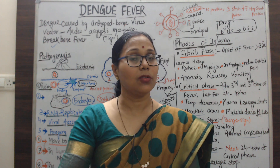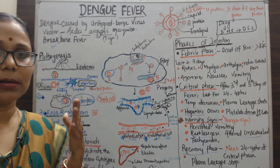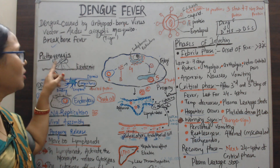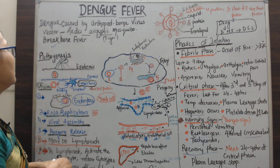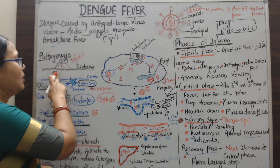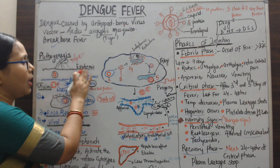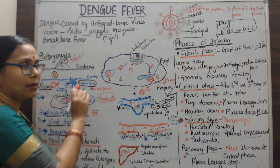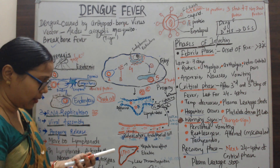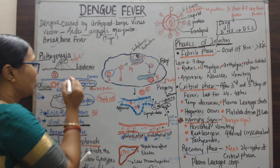The outer layer of the skin is the epidermis, and beneath the epidermis is the dermis layer. The infected mosquito bites us and the virus enters through its saliva into the epidermis — the outer layer of the skin. Beneath the epidermis in the dermis layer, dendritic Langerhans cells are present.